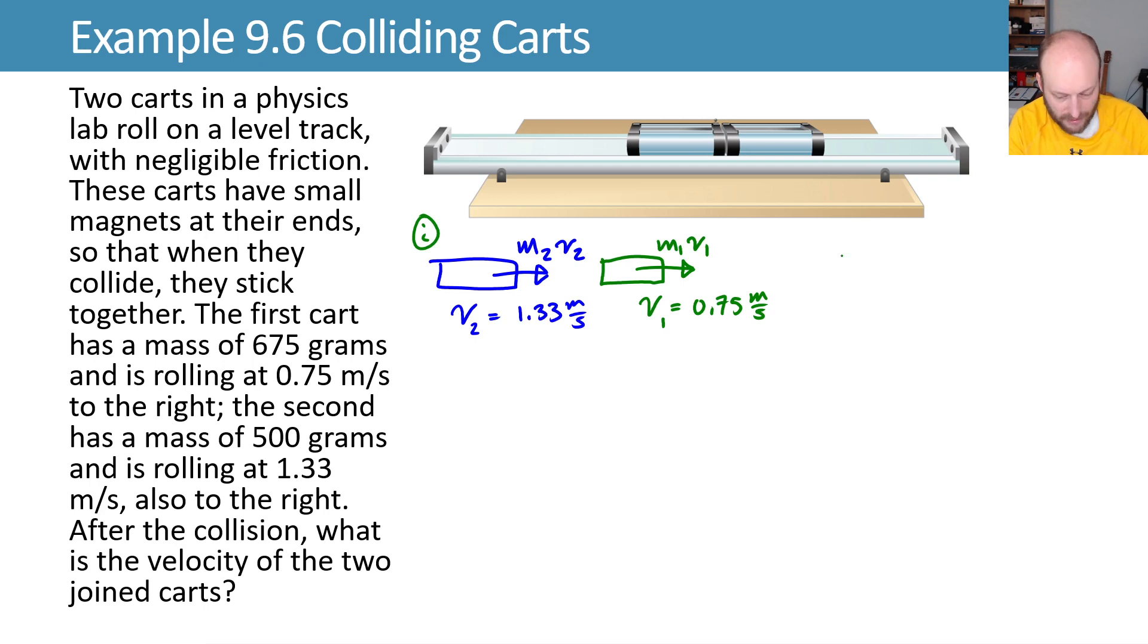And then our final situation is that the magnets are holding these carts together. So we have the cart and the other cart, they're being held together by the magnets, and they have some combined mass m1 plus m2 times the final velocity that I'll call vf. So this is my final situation.